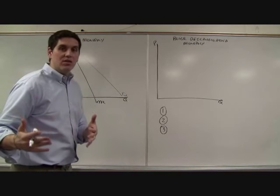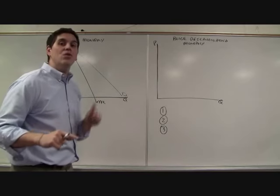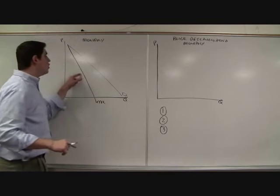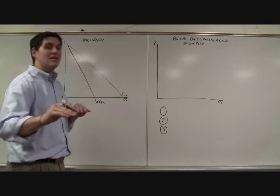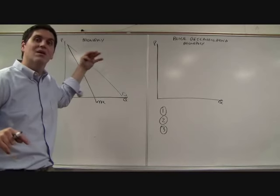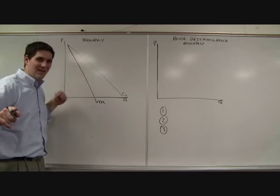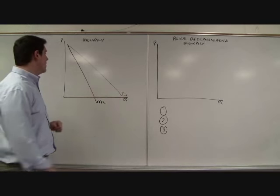To sell another unit, the firm has to lower the price of the next unit and the units it would have sold at a higher price. So the additional revenue that these monopolies get is not the price of the next unit. It's the price of the next unit minus the money they could have made by selling the price at a higher price for previous units. Did you get that? The point is marginal revenue is less than demand. That's the concept.